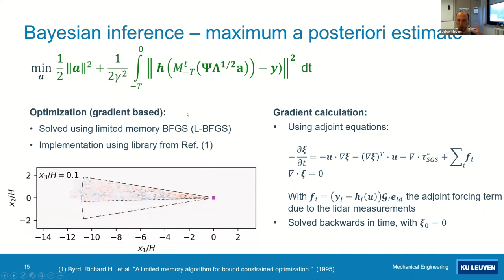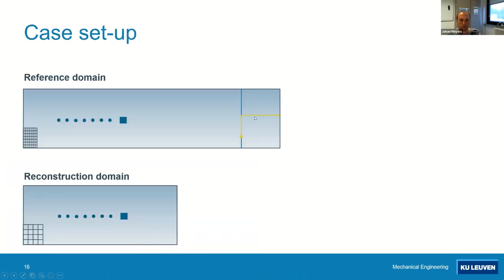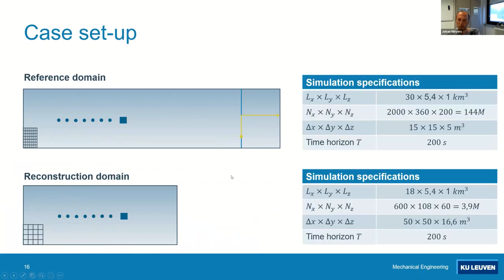We solve the optimization problem with an L-BFGS algorithm and use an adjoint to calculate the gradient. In the setup, we have a reference domain on a very fine mesh and a reconstruction domain on a coarse mesh. We measure in the reference domain and then reconstruct it in the reconstruction domain, and afterwards we can compare them to see how good we are. The reference domain has about 140,000 grid cells and the reconstruction domain about 4,000 grid cells.